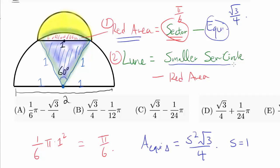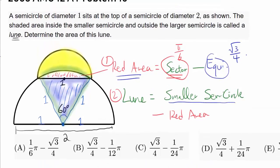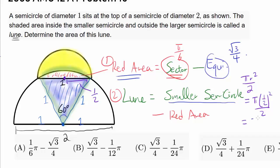Now let's find the area of the smaller semicircle. The radius of the smaller semicircle is 1/2. The area of the smaller semicircle is π r² / 2, with radius 1/2, which gives us (π × 1/4) / 2 = π/8.